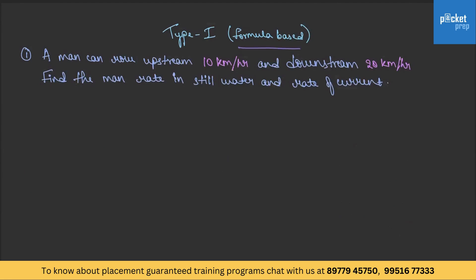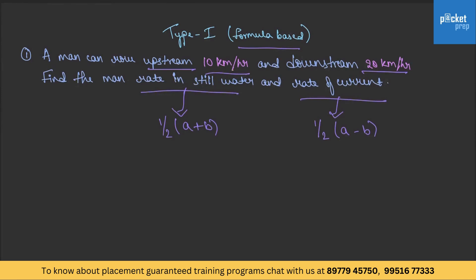Coming to Type 1, which is formula based. The question: a man can row upstream at 10 km/h and downstream at 20 km/h. Find the man's rate in still water and rate of current. We directly have formulas: rate in still water is half of a plus b, and rate of current is half of a minus b. Upstream 10 km/h means moving against the stream; downstream 20 km/h means moving in the direction of the stream.